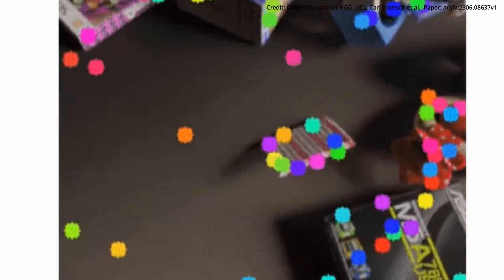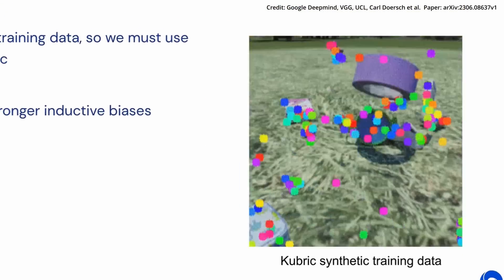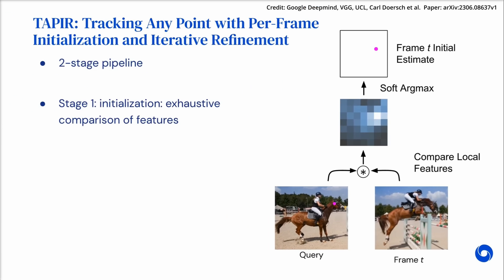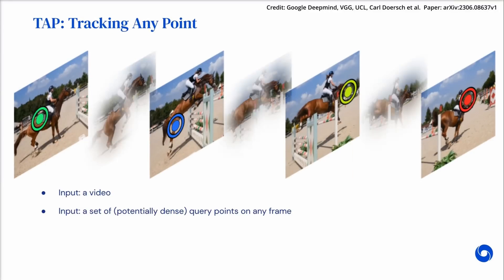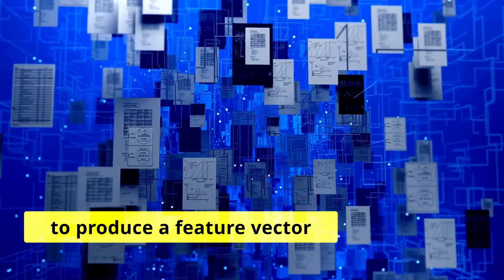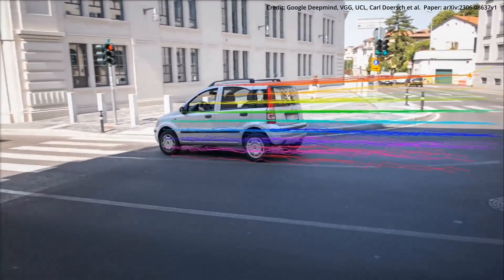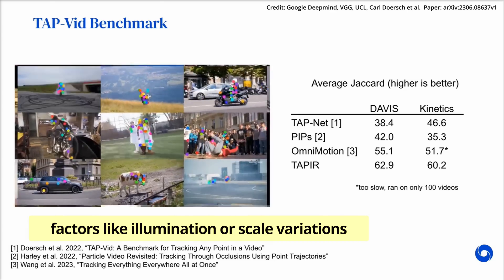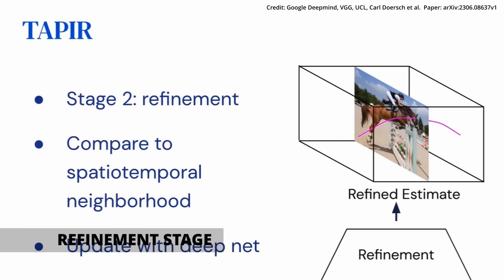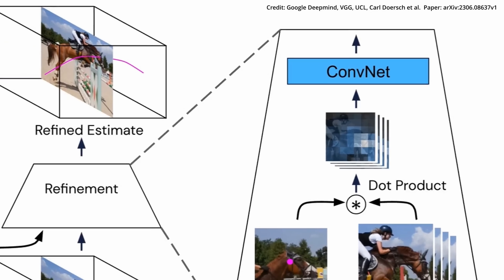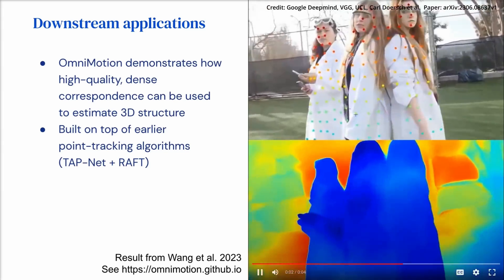So how does TAPER function? It employs a two-stage algorithm consisting of a matching stage and a refinement stage. In the matching stage, it evaluates each video frame individually, trying to find an appropriate candidate point match for the query point using a deep neural network that takes an image patch surrounding the query point and produces a feature vector signifying its appearance. However, merely finding candidate point matches isn't sufficient — it's also necessary to consider how the query point evolves over time and how factors like illumination or scale variations can alter its appearance. This is where the refinement stage comes in.